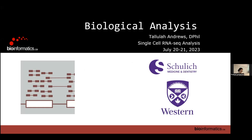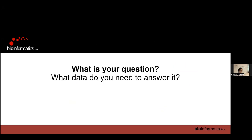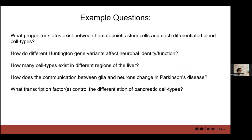Now we're going to do biological analysis, which is all the awesome stuff where we answer our biological question. We need to keep in mind: what is your question and what data do you need to answer it? For example, you could ask something like what are the progenitor states that exist between hematopoietic stem cells as they differentiate into blood cell types. For that you need bone marrow samples, only the normal condition.